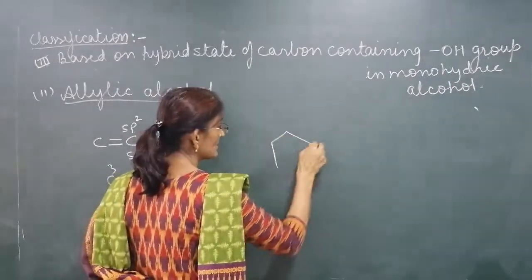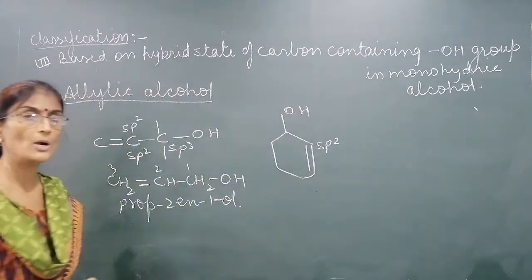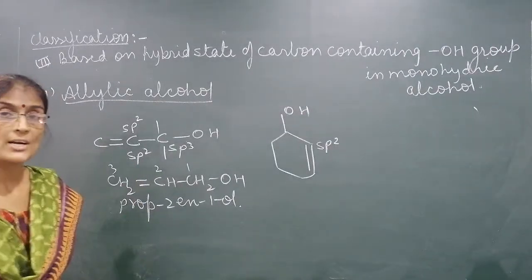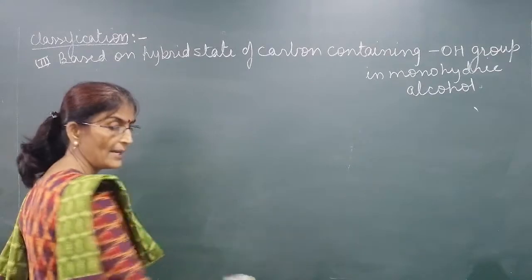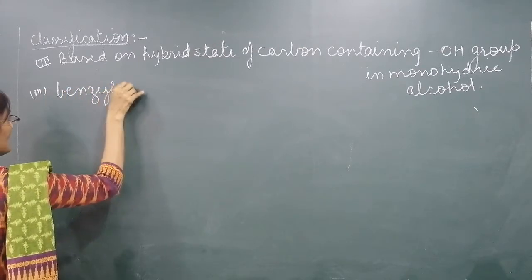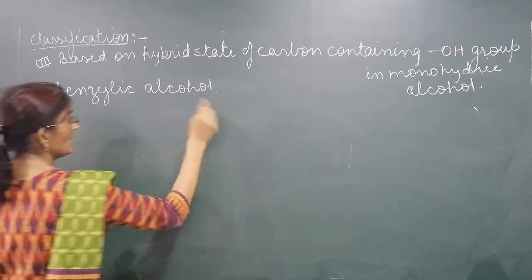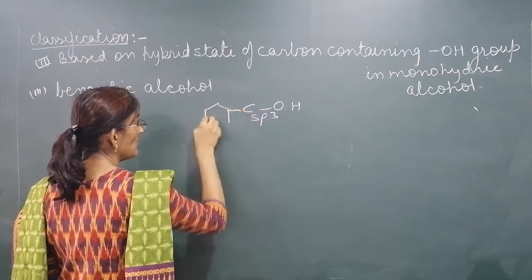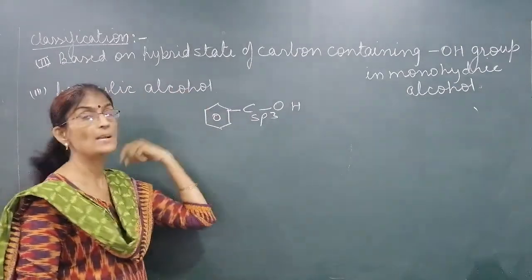Another example: this SP2 hybridized carbon, with SP3 carbon having OH attached — this is called Allylic alcohol. The third type of compound in which the OH-containing carbon is SP3 hybridized is Benzylic alcohol. In Benzylic alcohol, the OH-containing SP3 carbon is connected to the carbon of the Benzene ring, meaning there is only one carbon between the OH group and the benzene ring.